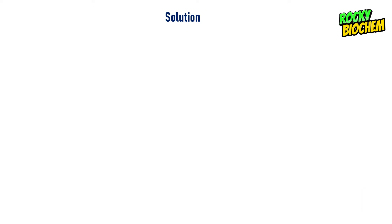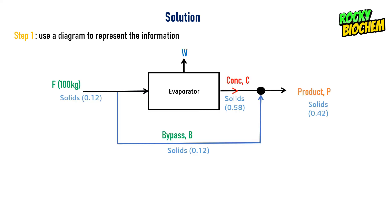The solution is divided into three sections. First, we represent the information in a diagram: feed F = 100 kg with 0.12 solids fraction; product P with 0.42 solids; concentrate C from the evaporator with 0.58 solids; and bypass B with 0.12 solids — the same as the feed. The bypass fraction equals the feed solid fraction since it is the same stream.